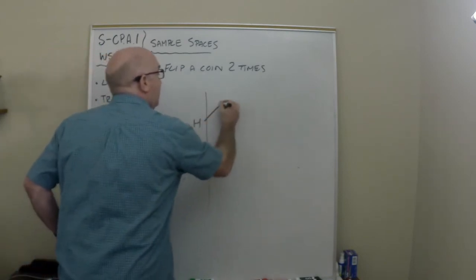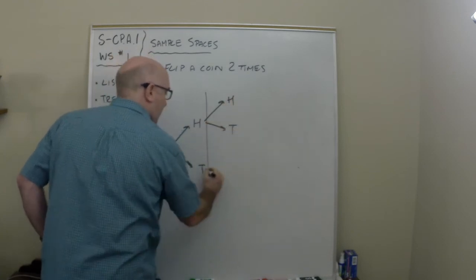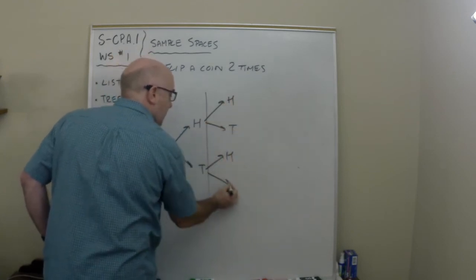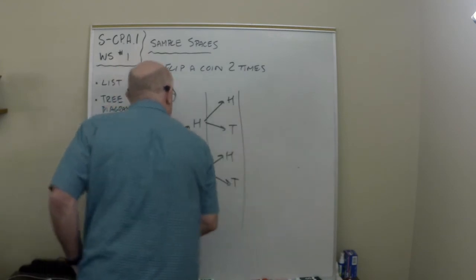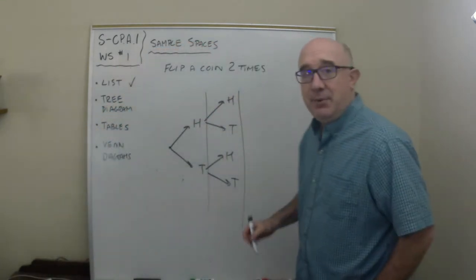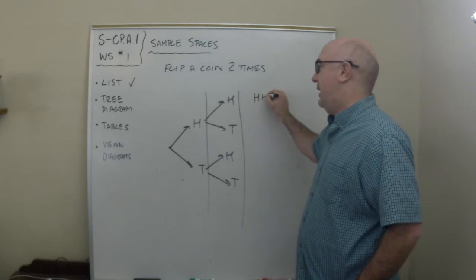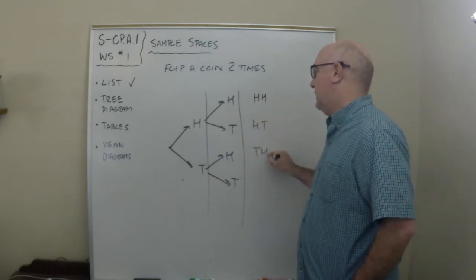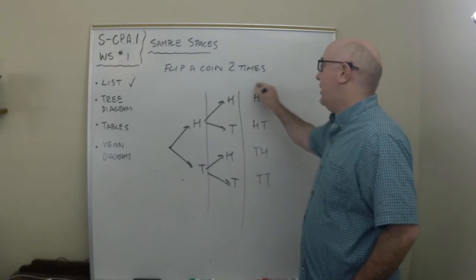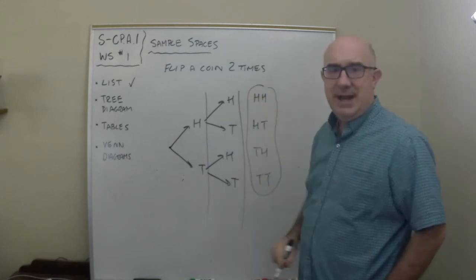Then from there you could have got a head after that or a tail after that or a head from this one or a tail from this one. That's your second flip. So the sample space is you could have got a head head, a head tail, a tail head, and then a tail tail. There are four things in the sample space.